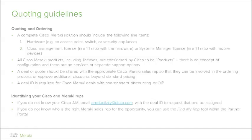As such, it is highly recommended that they be engaged from the very beginning, even before submitting the quote. To assist partners in locating their Cisco and/or Meraki account reps, the email alias productivity@cisco.com, which is constantly being monitored, can be utilized along with the Find My Rep tool within the Meraki Partner Portal.